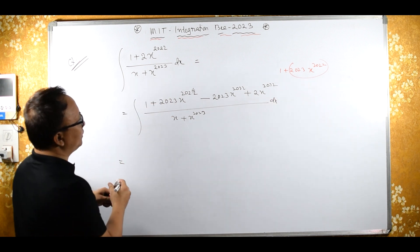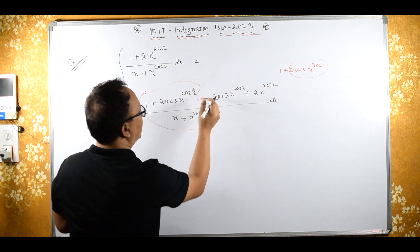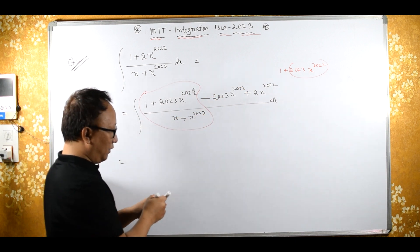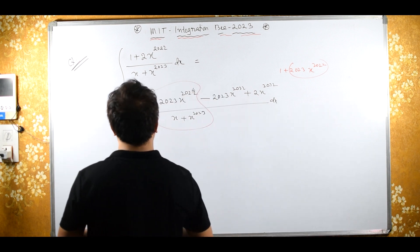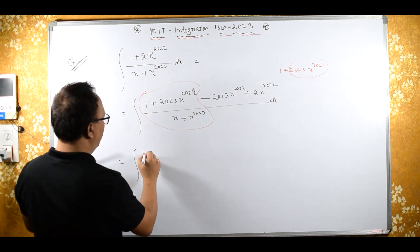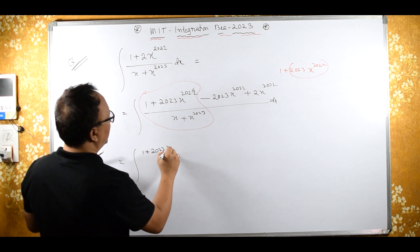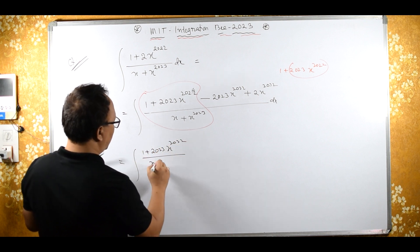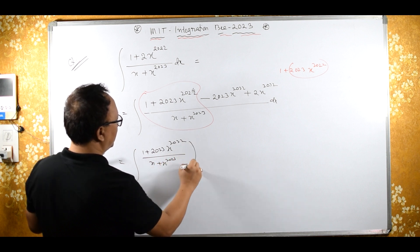Now, this equals this same as this upon this and this upon this. Therefore, the integral of this upon 1 plus 2023 x raised to 2022 upon x plus x raised to 2023 dx.